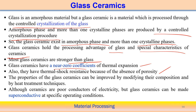Glass ceramics can be further improved through heat treatment techniques, allowing alteration or improvement of properties. In general, glass ceramics are poor conductors of electricity, but glass ceramics can be made superconductive under very specific operating conditions. Very special processing techniques need to be followed to make glass ceramics superconducting. Glass ceramics have properties in between glass and complete ceramics, with very specific properties achievable through controlling the crystallization process.